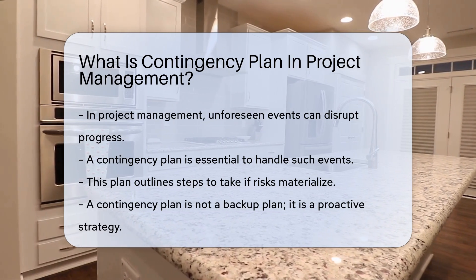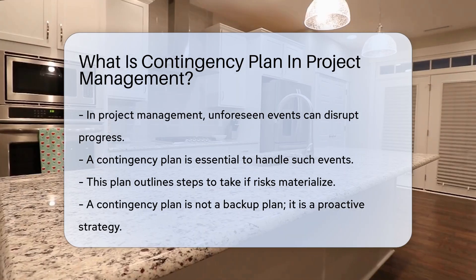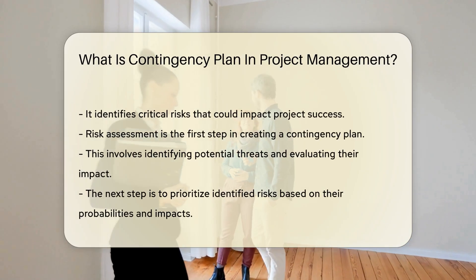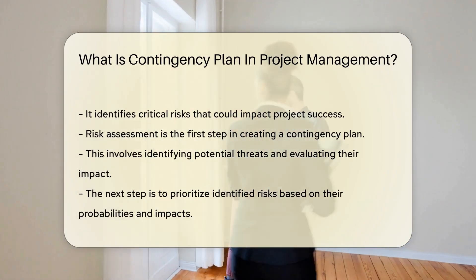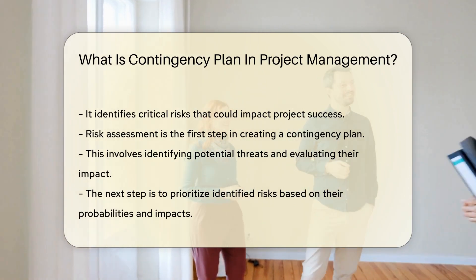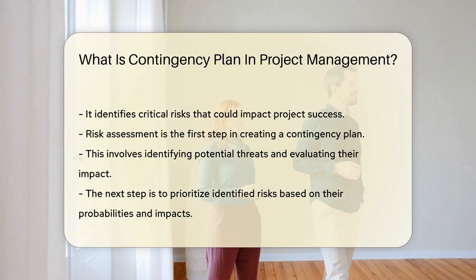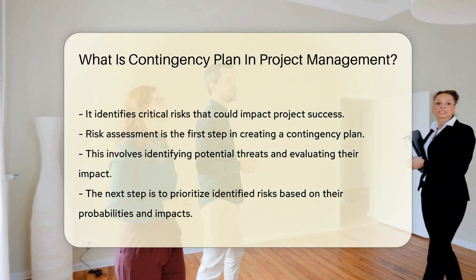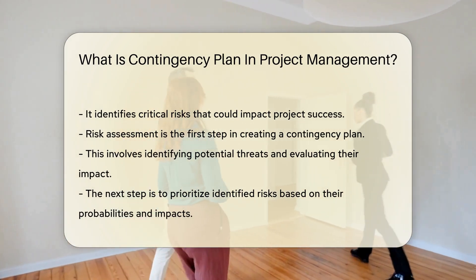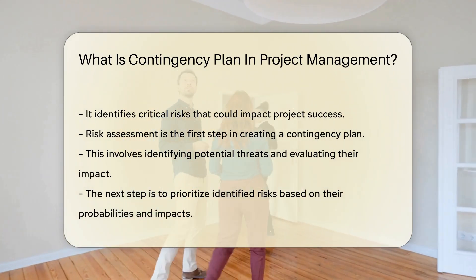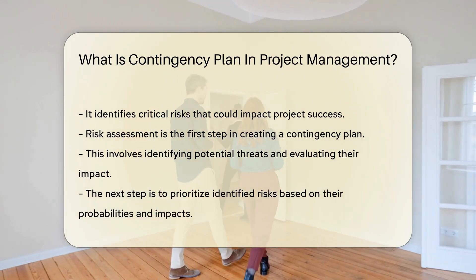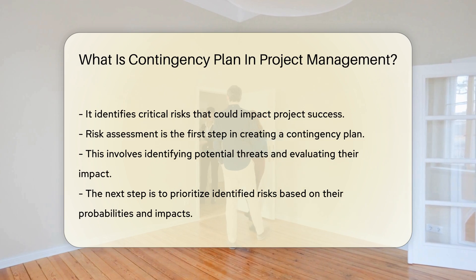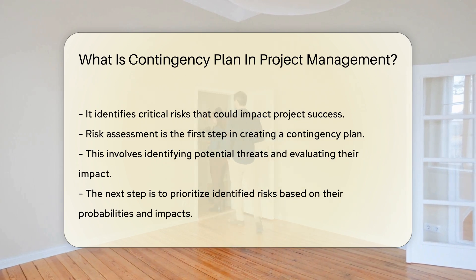It identifies critical risks that could impact project success. Risk assessment is the first step in creating a contingency plan. This involves identifying potential threats and evaluating their impact. Once risks are identified, the next step is to prioritize them. Not all risks are equal — some have higher probabilities and impacts. After prioritizing, develop specific actions to mitigate each risk.